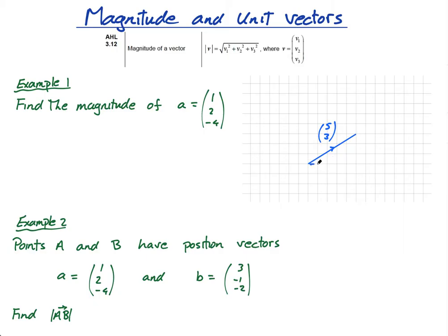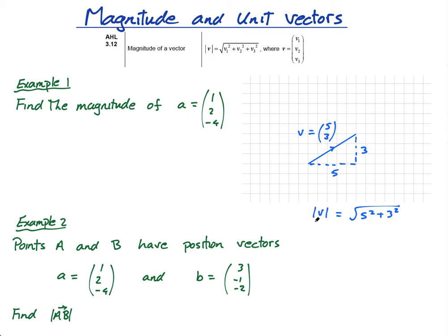Hopefully you can see that the way you get it would be to use Pythagoras' theorem. The magnitude of this vector — and this is how you write the magnitude, you put it in these modulus signs. So if this was v, the magnitude of v is just going to be the square root of 5 squared plus 3 squared, which is the square root of 25 plus 9, so the square root of 34. You can just leave it like that — that is in exact form.